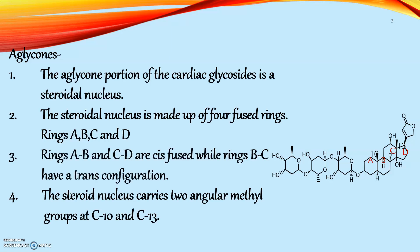Now, the aglycon portion of the Cardiac Glycoside is a steroidal nucleus which is attached to a sugar. The steroidal nucleus is made up of four fused rings: ring A, B, C, and D. Three six-membered cyclohexane rings, i.e. rings A, B, and C, and one five-membered cyclopentane ring, i.e. ring D.